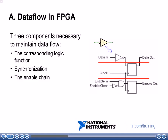At the bottom, we see the enable chain. The enable chain section includes additional synchronization registers that only output on the rising edge of the clock. Due to the enable chain overhead, each function takes a minimum of one clock cycle. The enable chain guarantees that the FPGA logic executes in the same order as it appears on the LabVIEW block diagram — in other words, it enforces data flow.